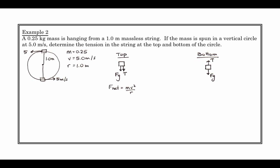Let's look at the top first. F net equals mv² over r. Tension plus the force of gravity, tension plus mg, equals mv² over r. So this is for the top. When we sub in m, g, v, and r, and rearrange and solve for tension, we get 3.8 newtons of tension at the top.